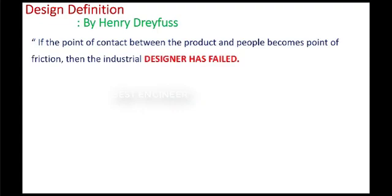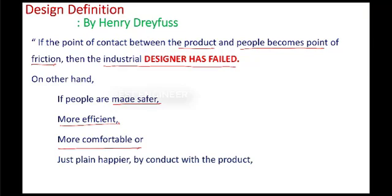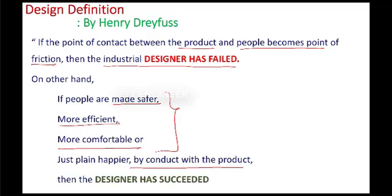Let's see the definition by Henry. If a point of contact between the product and the people becomes a friction, then the industrial designer has failed. Suppose on the other hand, if the people are made safer, more efficient, more comfort, then by contacting with the people along with these constraints, then the designer has succeeded.